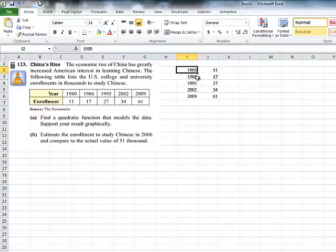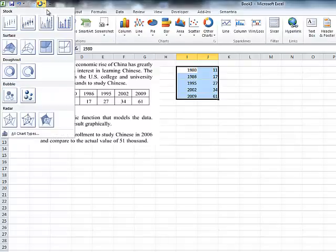So the first thing I think we should do is to just chart this and get some kind of an idea of what it looks like. So I'm just going to select those two columns, those two sets of data within those columns. And I'll say insert.